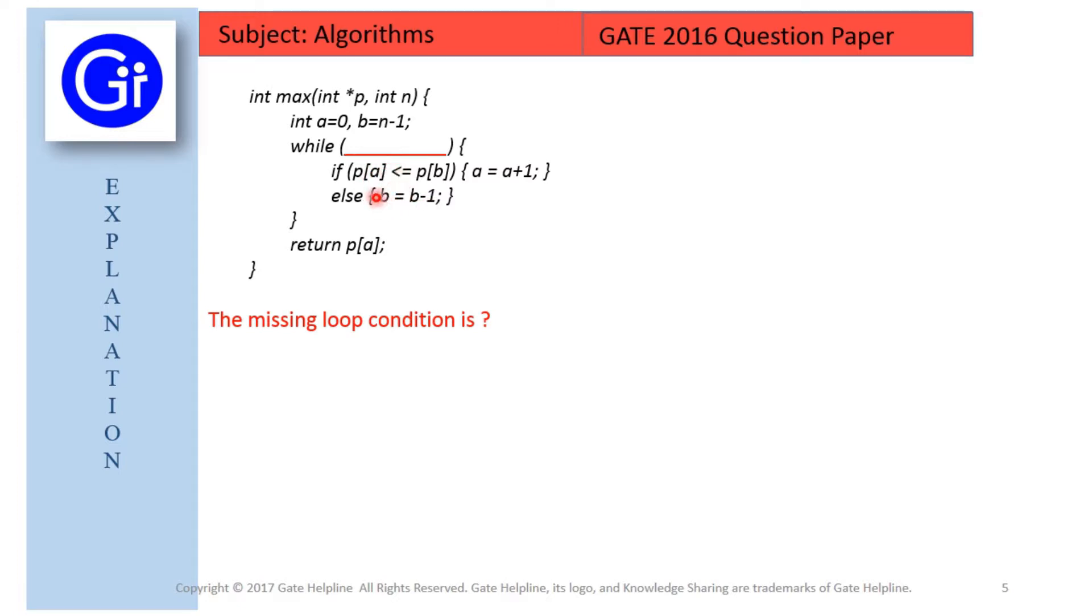So here what is happening is we are coming towards the middle of the array. That is, the LHS is increasing and the RHS is decreasing.